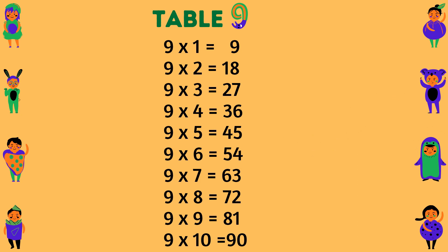Table of 9. 9 times 1 equals 9. 9 times 2 equals 18. 9 times 3 equals 27. 9 times 4 equals 36. 9 times 5 equals 45. 9 times 6 equals 54. 9 times 7 equals 63. 9 times 8 equals 72. 9 times 9 equals 81. 9 times 10 equals 90.